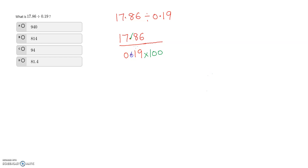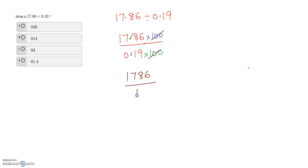So we remove the decimal from the denominator and write 100 in the numerator. When the number is in the numerator we write the base 10 into the denominator. The 100 and 100 cancel out, leaving us with 1786 divided by 19 — the decimals have been removed.